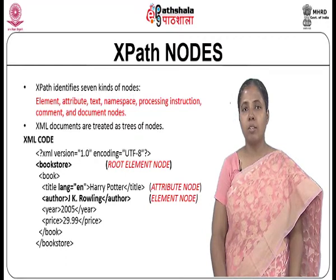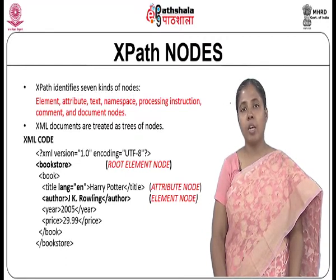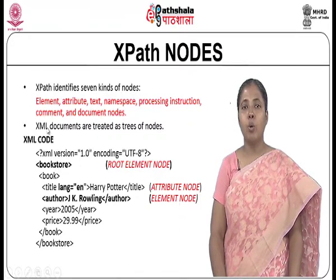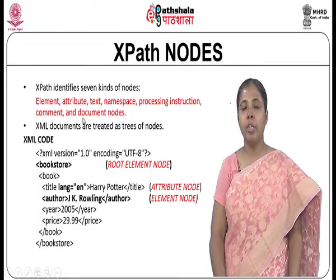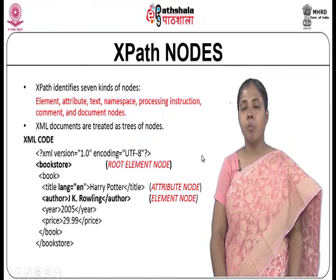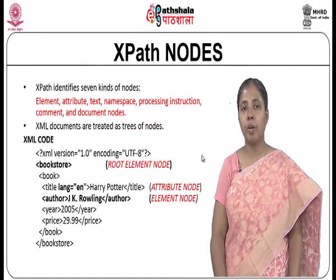XPath identifies seven kinds of nodes in an XML document. The nodes are categorized as element node, attribute node, text node, namespaces, processing instruction, comment, and document nodes. XML documents are treated as a tree of nodes, as we have seen in the previous modules.